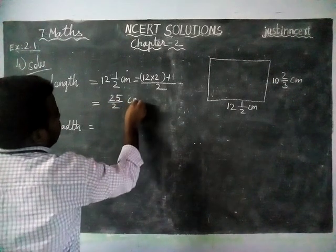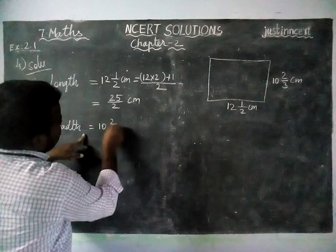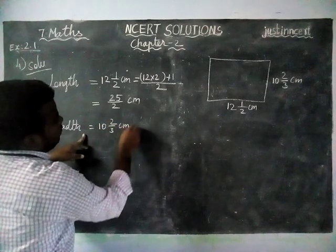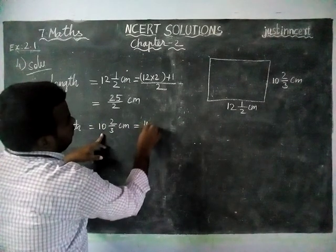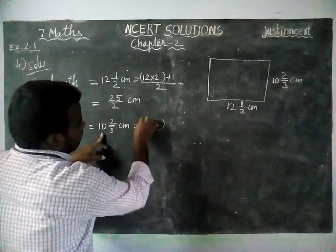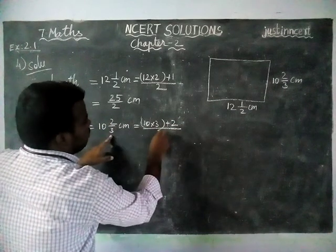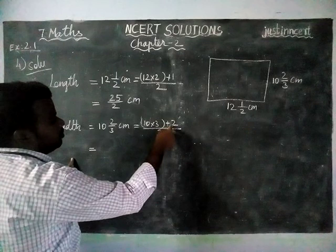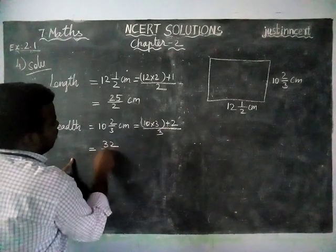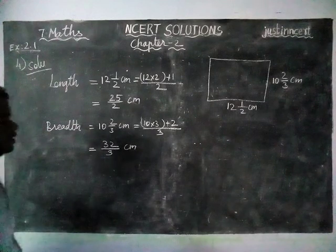In the same way, breadth is equal to 10 and 2/3 centimeter. We have to convert into improper, so whole part into denominator: 10 into 3 plus numerator 2 divided by the denominator 3, is equal to 10 3s are 30, 30 plus 2 is equal to 32 divided by 3 centimeter.